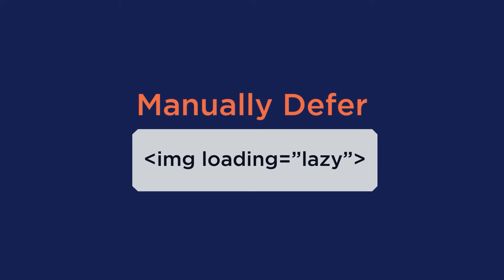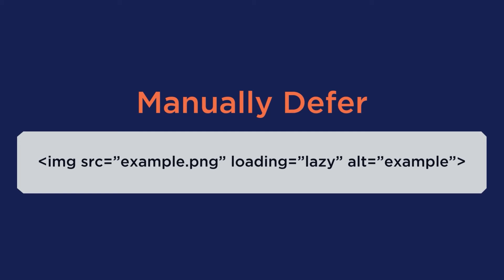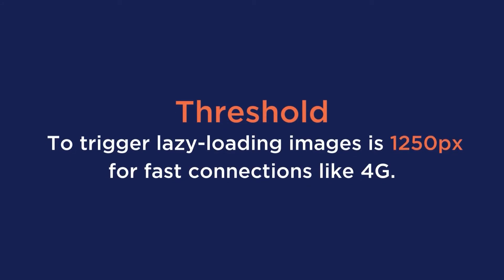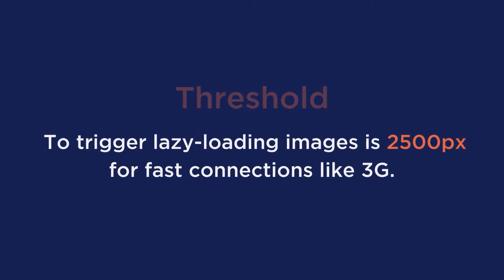However, in this case, lazy loading will always be the easiest option. You can manually defer off-screen images without any plugins by using the loading attribute, and here is an example of what the code with this attribute will look like. This works because when the lazy loading attribute is added, it will trigger a browser-level lazy load. It's important to know that the threshold to trigger loading images is 1,250 pixels for fast connections like 4G, and 2,500 pixels for slower connections like 3G.